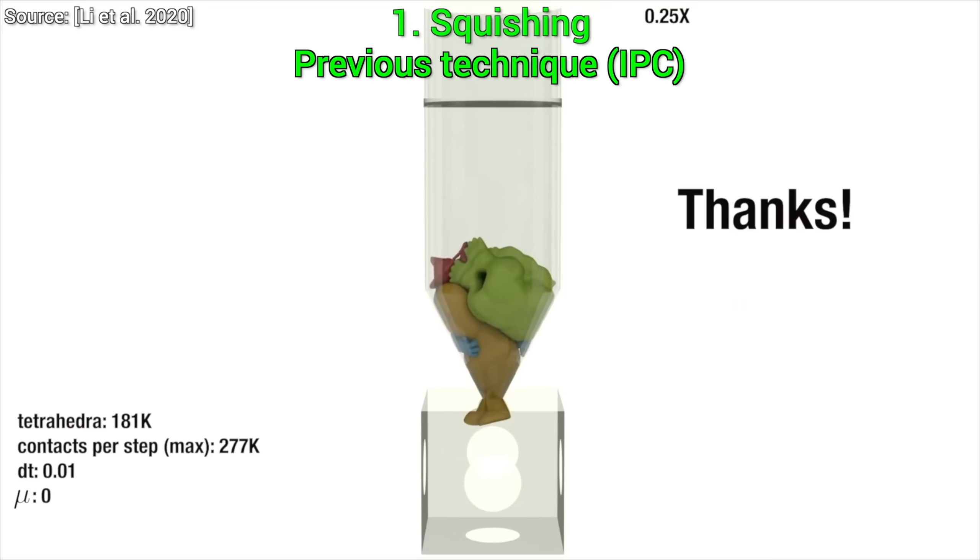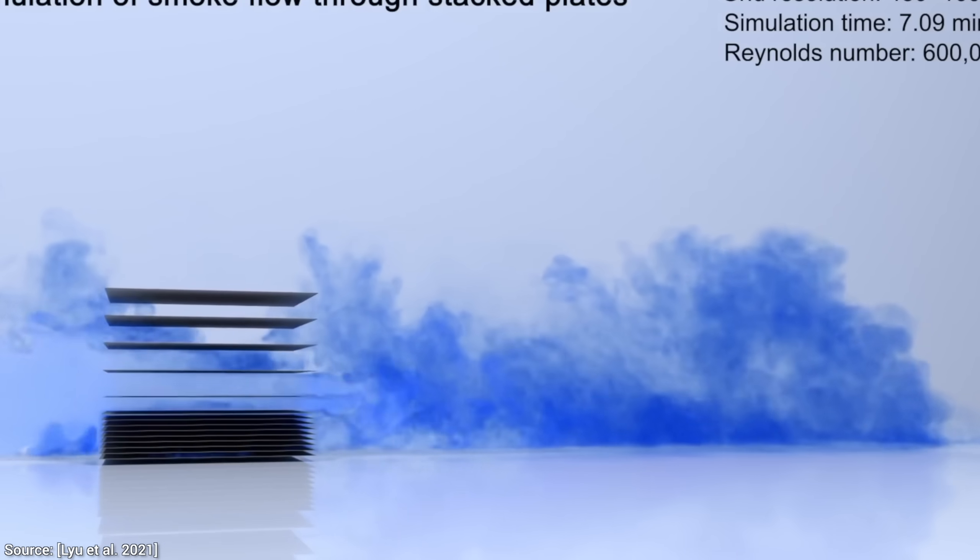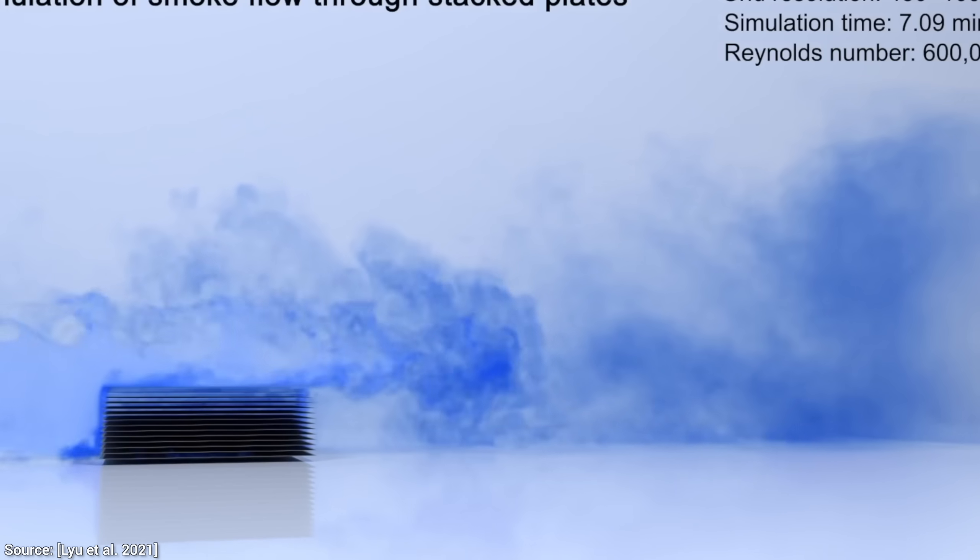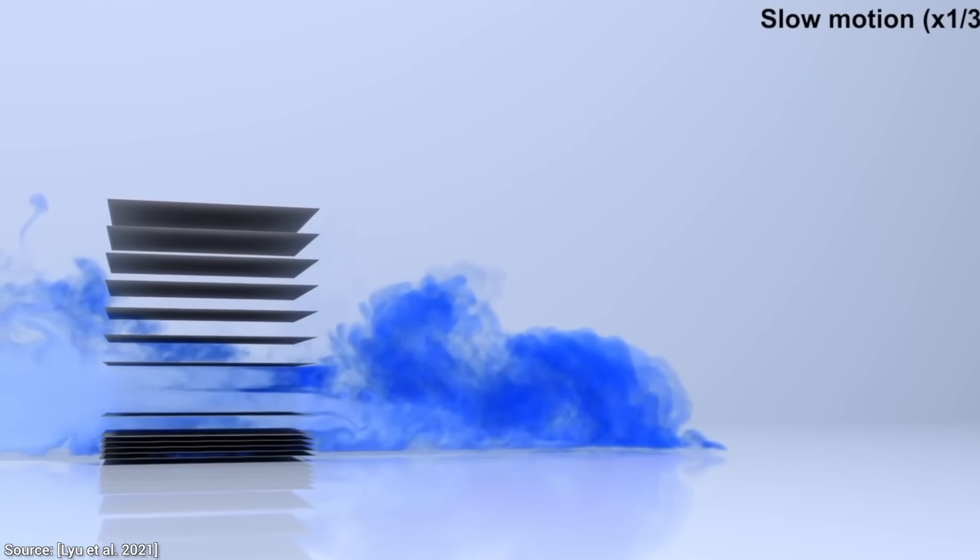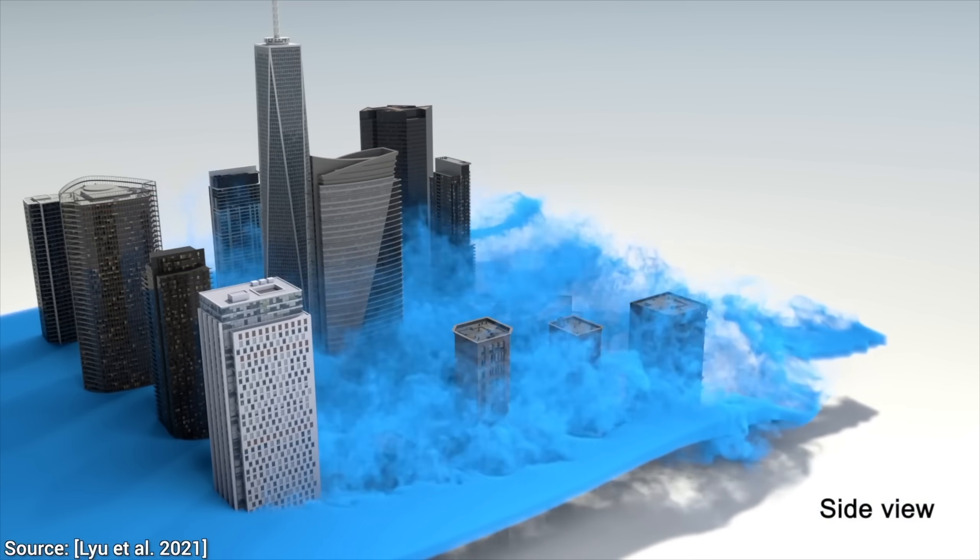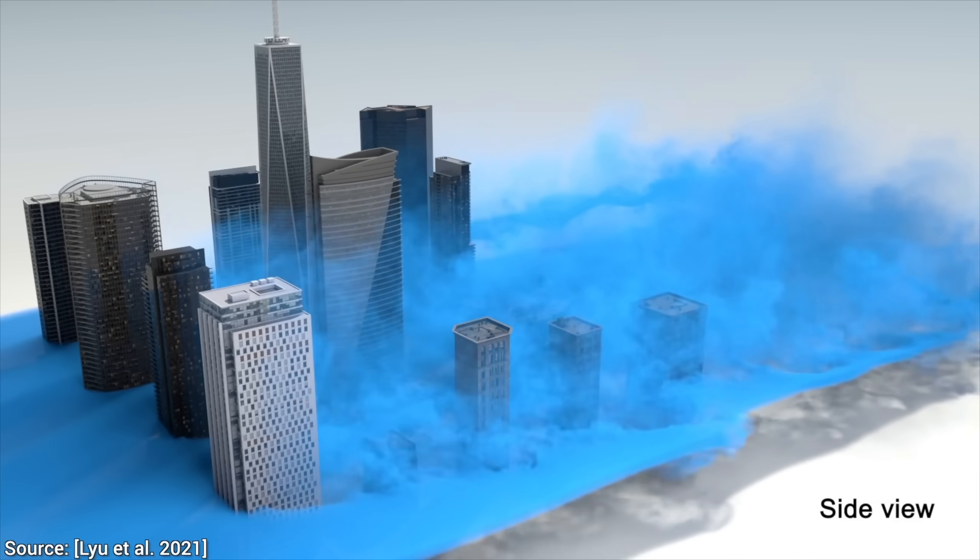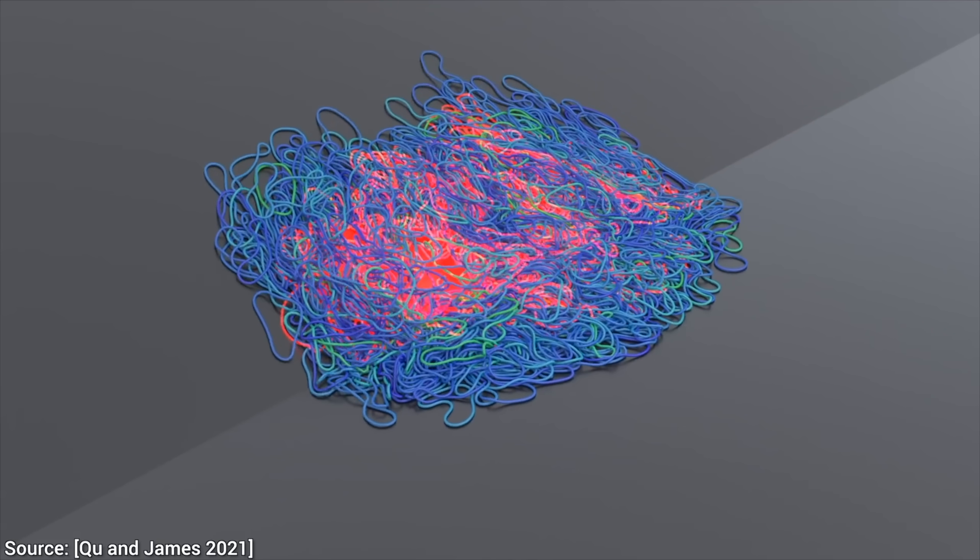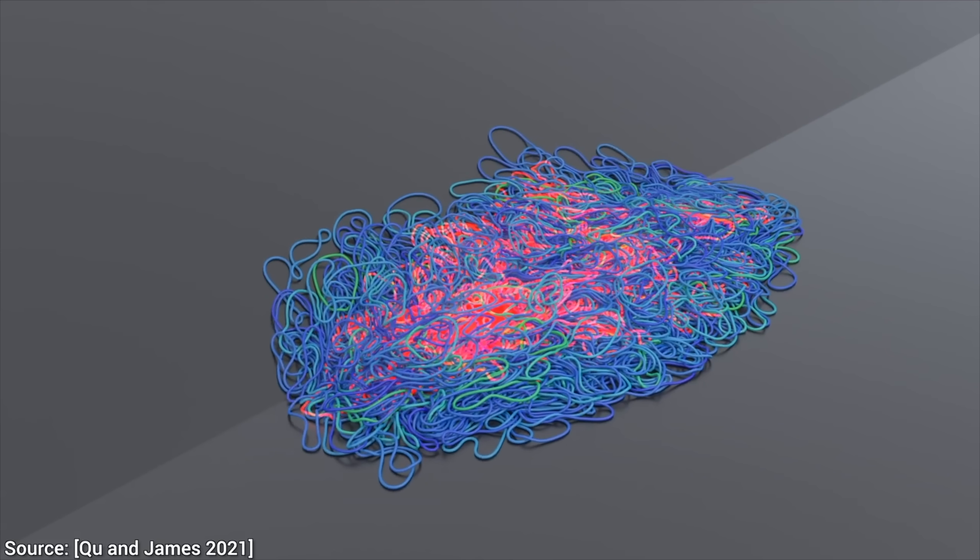A brilliant earlier technique called incremental potential contact or IPC made huge progress here. However, it had its own challenges. Imagine you're a traffic controller for an entire city. The rule is, if even a single car is about to cause just the tiniest collision, you must stop every single car in the entire city. Yes, even cars miles away on an empty highway have to slam their brakes. Previous methods worked a bit like this. A small, local problem could force the whole simulation to a grinding halt, making it incredibly slow and expensive to run.